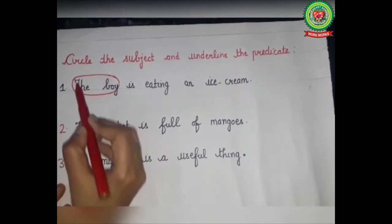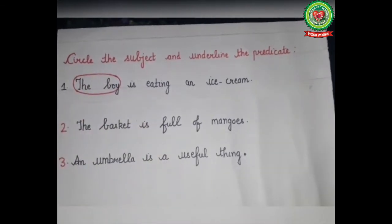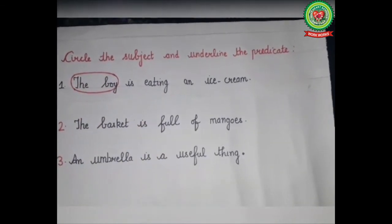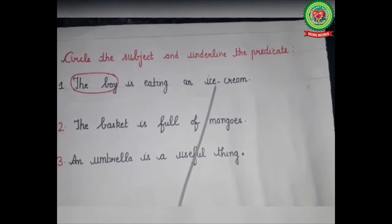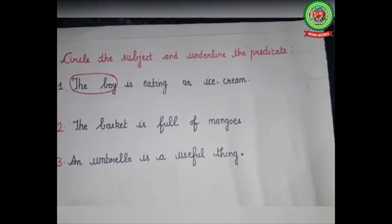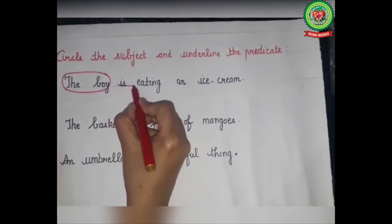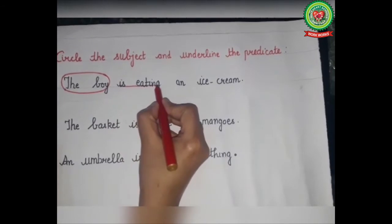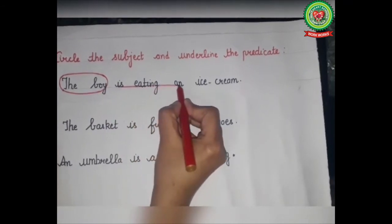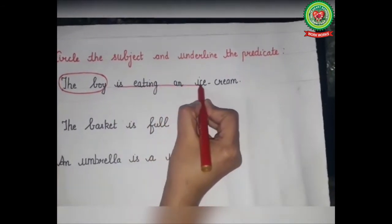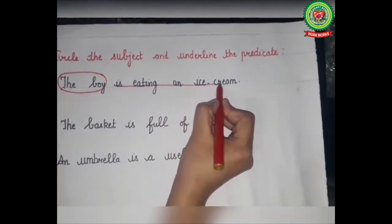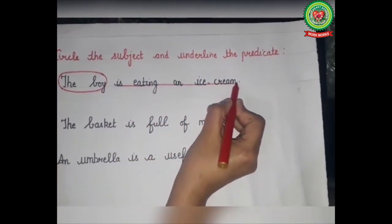What we are talking about the boy? The answer is 'is eating an ice cream,' so we will underline 'is eating an ice cream' as the predicate of the sentence.